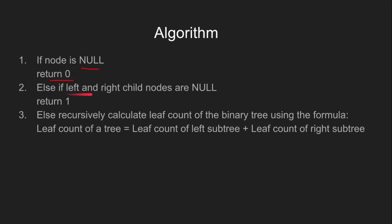Else, if the left and right child are null, we return 1. Else, we recursively calculate the count by simply adding the leaf count of left subtree and leaf count of right subtree.